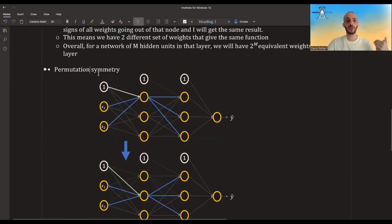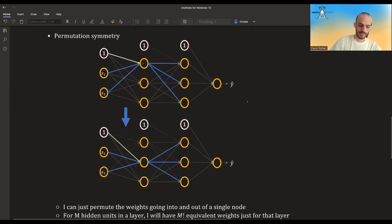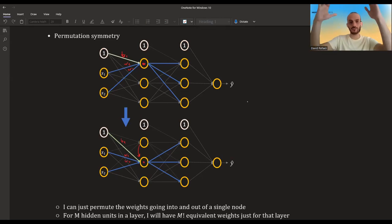Another example of symmetry is the permutation symmetry. So suppose I'm taking this node, and I'm taking all the weights that led to it, and I'm just moving them to this node over here. So this was b1, w1, w2, and now I'm saying this is b1, w1, w2. I'm taking their values, and I'm just putting them all to this.